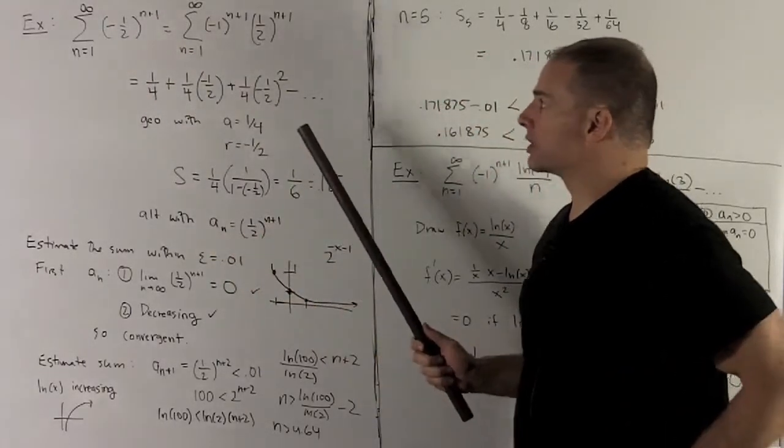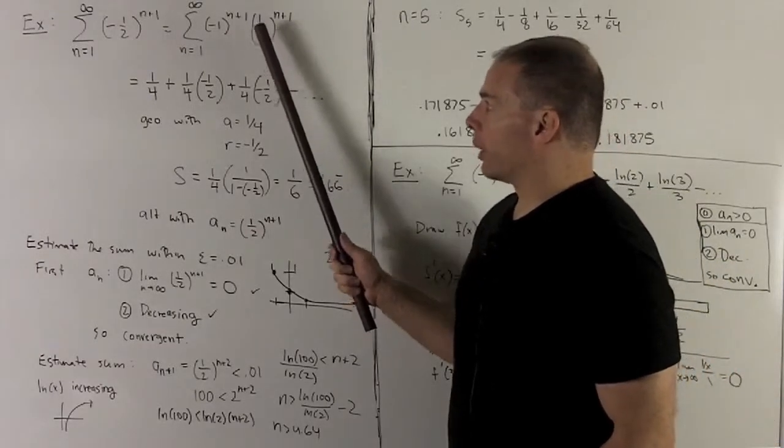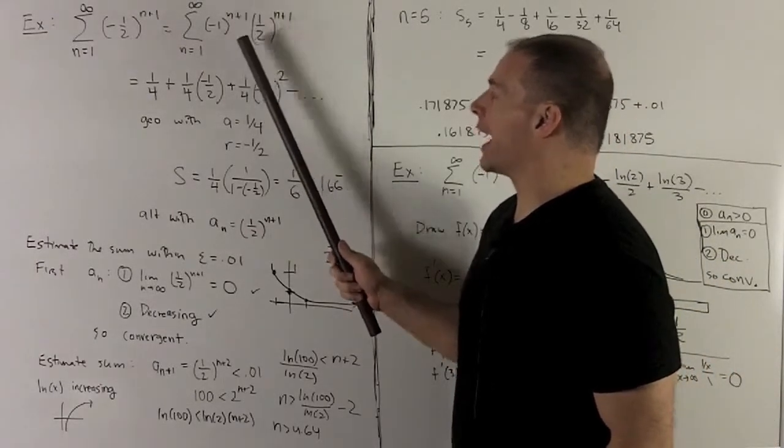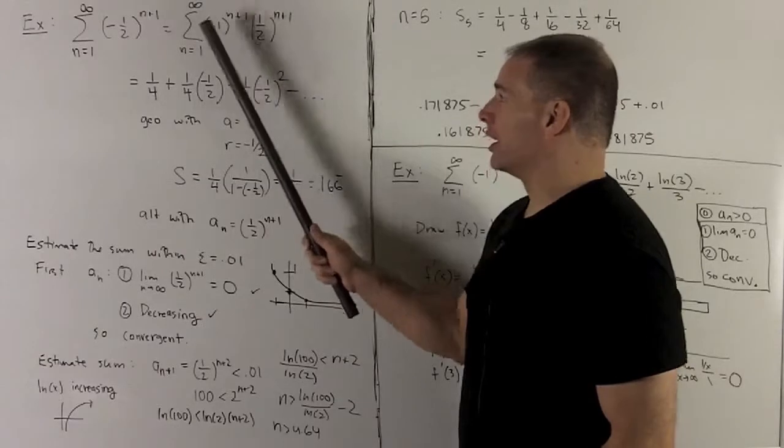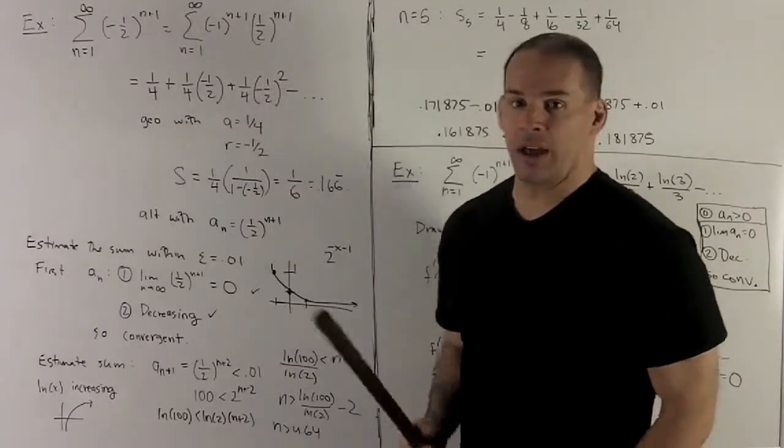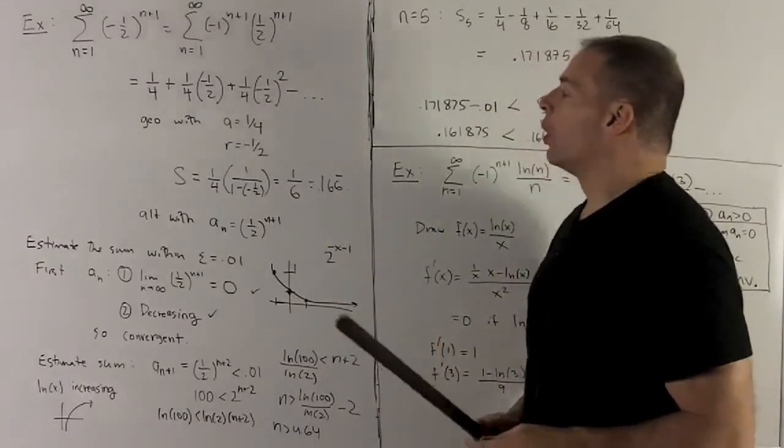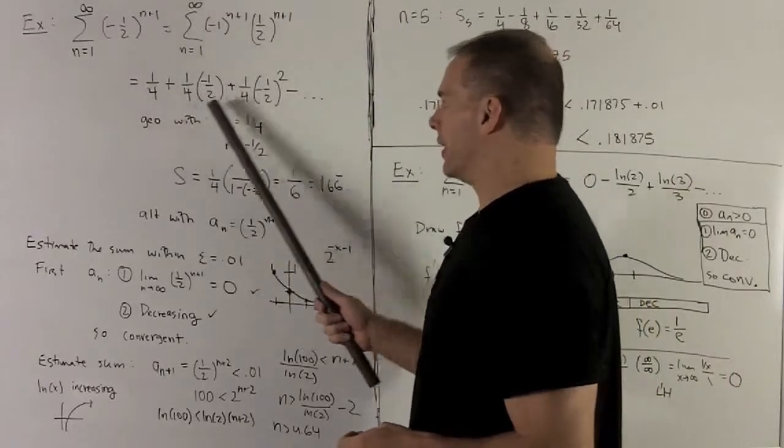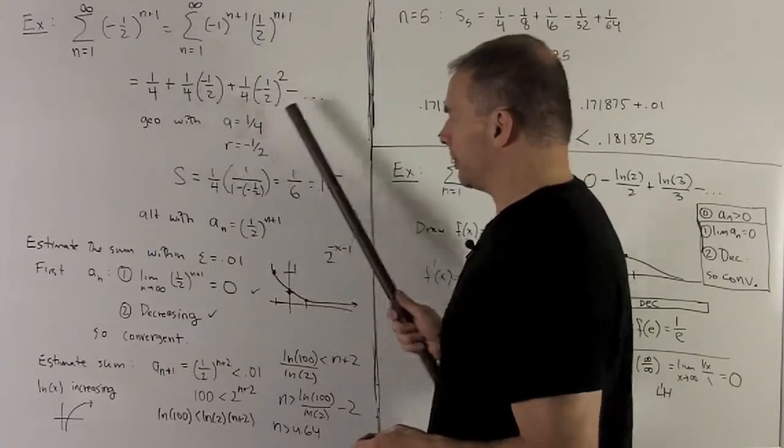So if you notice, what I can do is bring the minus 1 to the n plus 1 out, which emphasizes the qualities of an alternating series. Or I can write it out this way, which makes it look more like a geometric series.